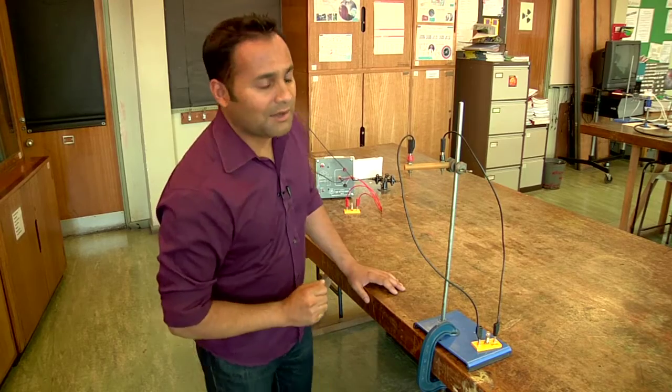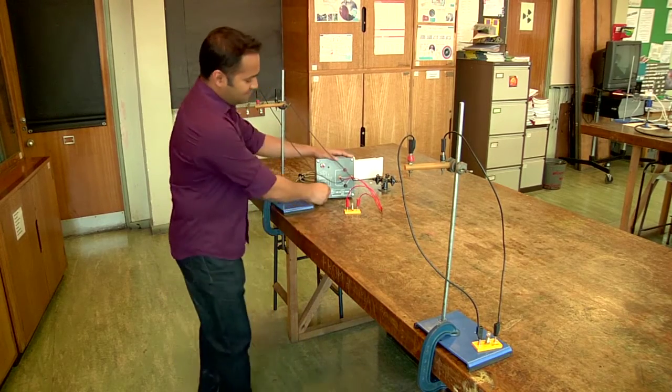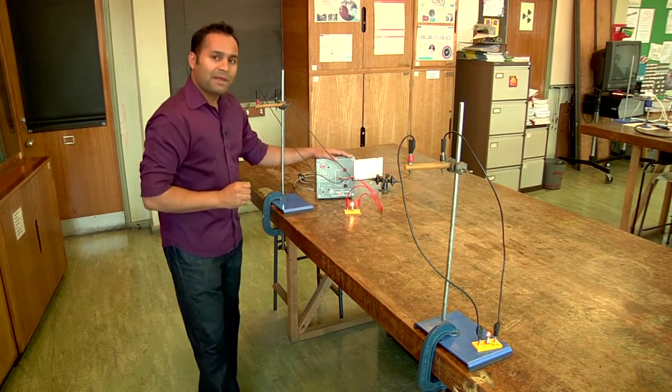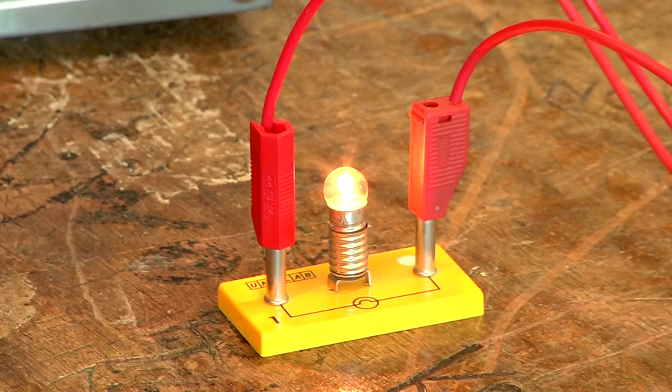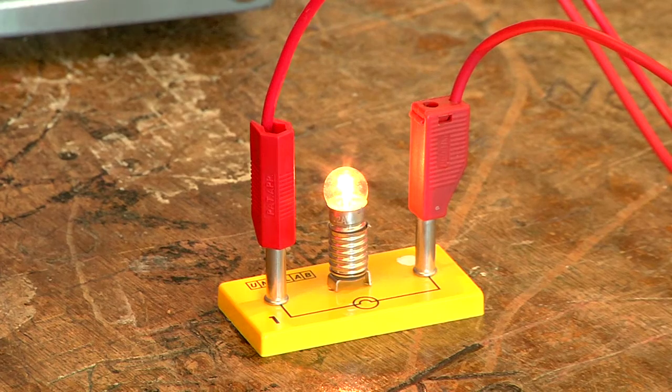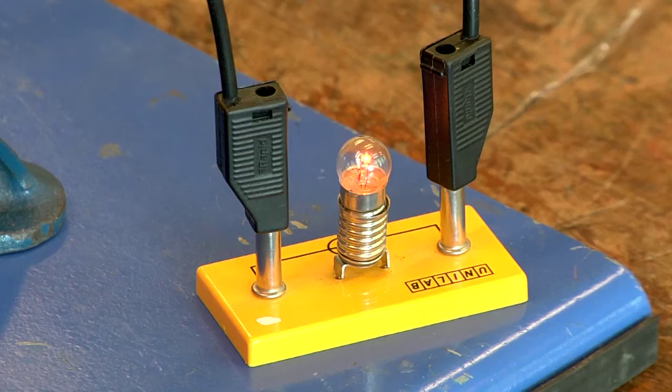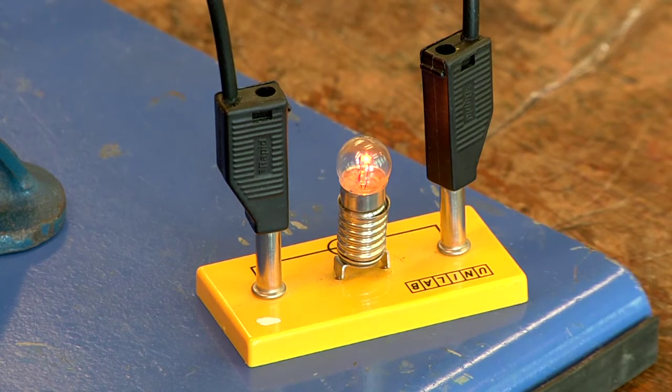Now watch what happens when I turn the power on. You can see that there's a clear difference in the brightness of the bulbs. The bulb close to the power station lights up brightly, whereas the bulb further away is significantly dimmer.